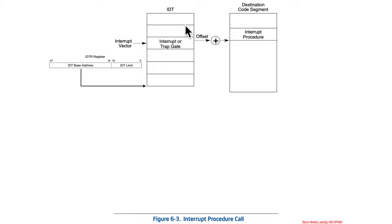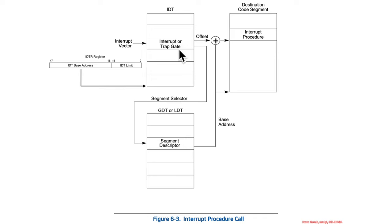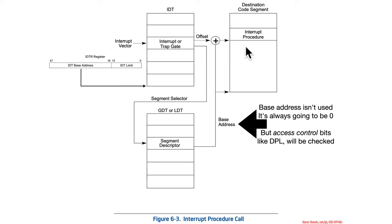The IDT register points at the base, and then there's the IDT which has entries inside of it. Inside of the IDT entries, there is a far pointer — so it has a segment selector inside and it's going to select something from the GDT or LDT. But because this is used for code execution, the actual base address of the segment is ignored because code segments are always treated as if they have a base of 0 — a base of 0, a limit of 2 to 64 minus 1. The part used from the GDT are the access control bits. So access control is still in effect; base addresses being reconfigurable is not.